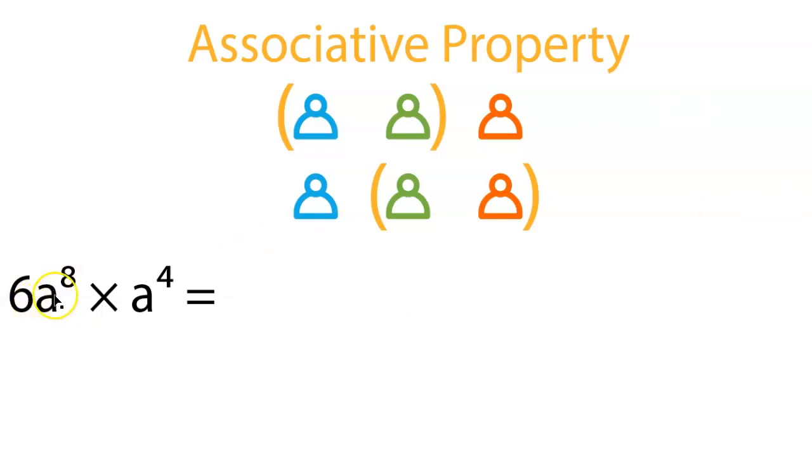So 6a to the 8th times a to the 4th. What do we do first? Well, first we're going to say, okay, this thing, multiplication form, breaks down to 6 times a to the 8th. Now you guys also know you could do multiplication form, a times a times a times a to the 8 times, 4 times over here, but maybe we don't always want to write that stuff out. So let's leave them like this for now.